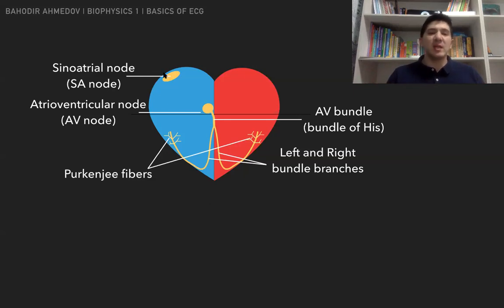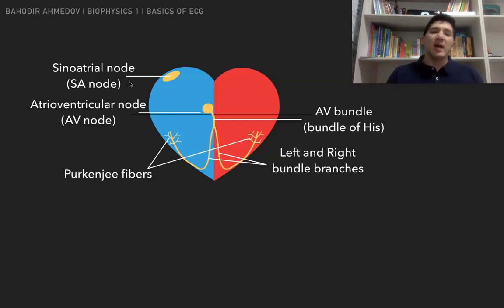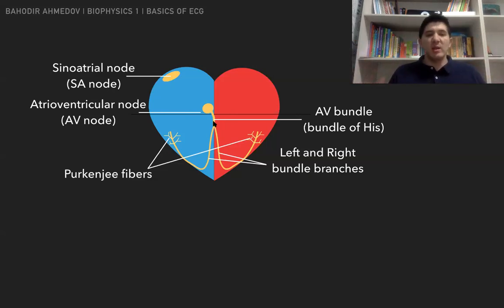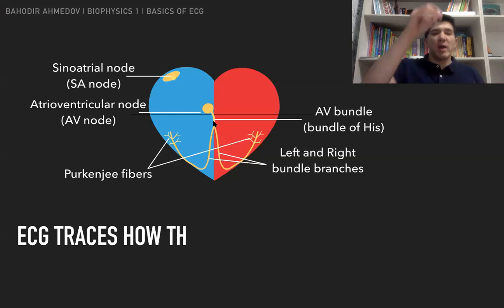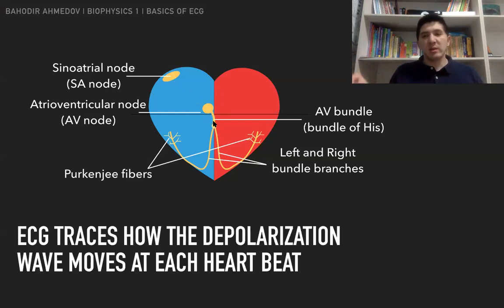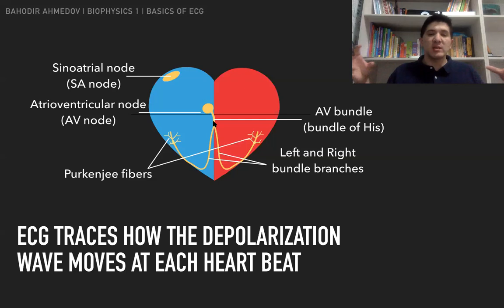The action potential, which is created at the SA node — the main pacemaker of the heart, which basically creates the beats — is going to move through all of those parts: through the AV node, through the AV bundle, through the left and right bundle branches, and the Purkinje fibers. As it moves through all of these parts, it basically depolarizes the cells, and the ECG actually traces this depolarization through all of those spots.